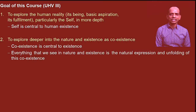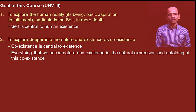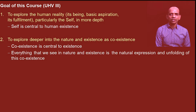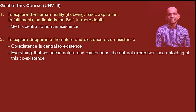Next we'll go to understand nature and existence. We had discussed that nature exists in four orders and the whole of nature is submerged in space — this is termed as coexistence. Now we'll see how coexistence is central to existence, and we'll be able to see that everything we observe in nature and existence is the natural expression and unfolding of this coexistence.